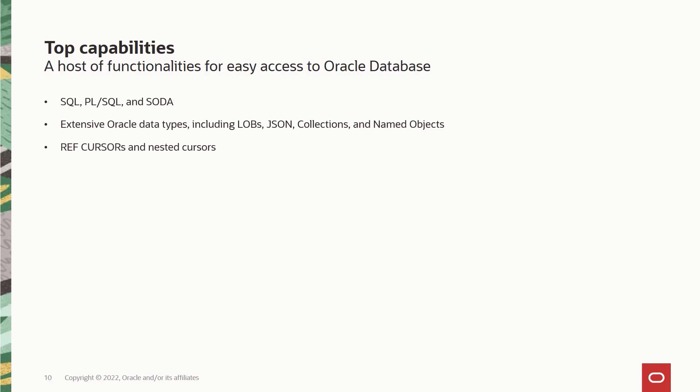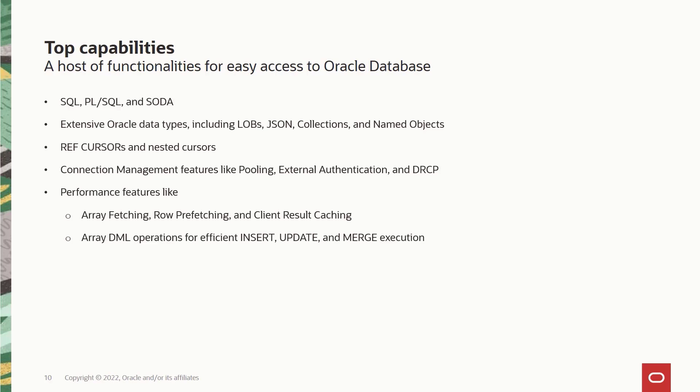Next we have ref cursors and nested cursors support. Then we have a bunch of connection management features like pooling, external authentication capabilities like Kerberos and LDAP authentication, and also the ability to connect to database resident connection pooling when enabled in Oracle database, which allows for optimal usage of Oracle database resources. Next you have performance features like array fetching and row prefetching, which allows for efficient use of the network. Then you have client result caching capability which improves the performance of frequently executed lookup statements. Finally you can do array DML operations for efficient insert, update and merge execution, and these operations also enable fetching of large result sets with easy tuning.